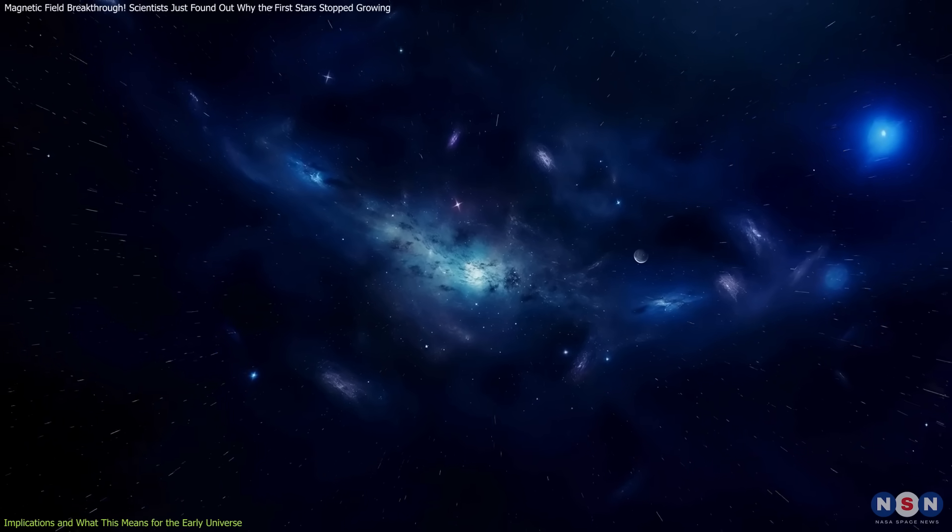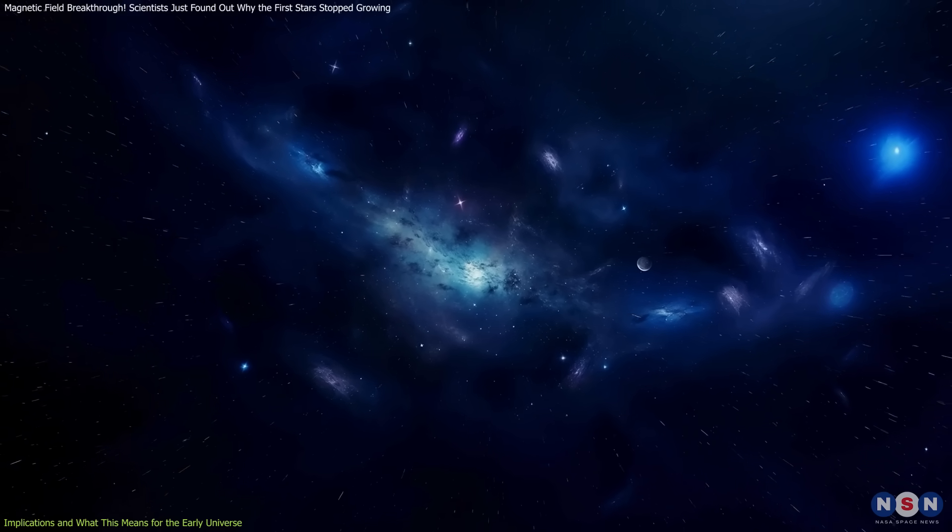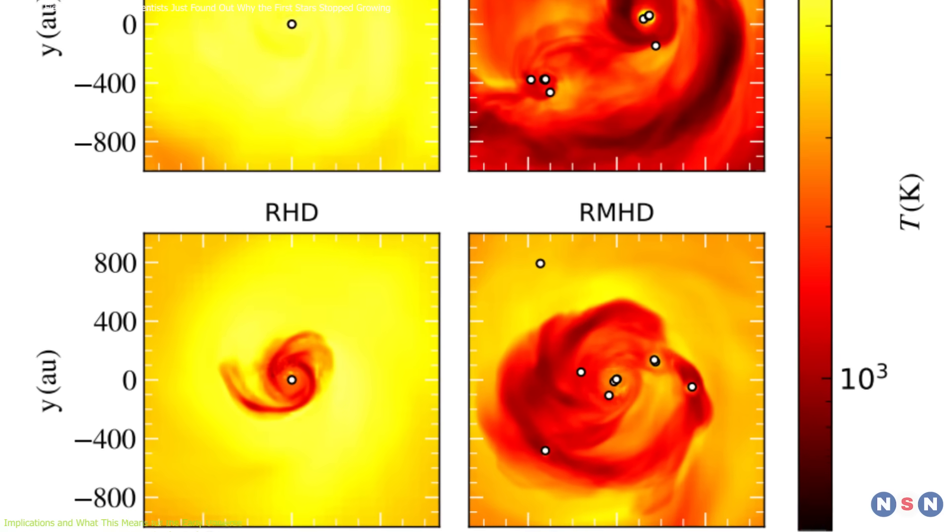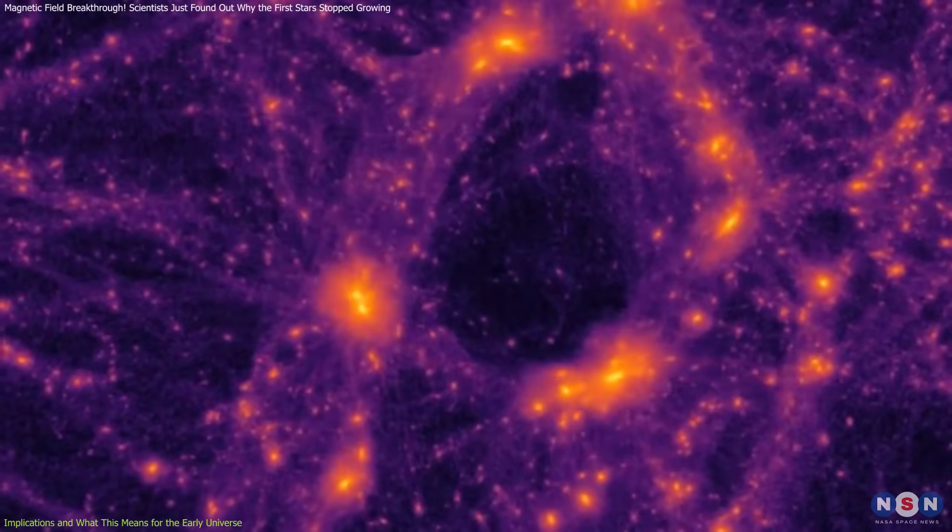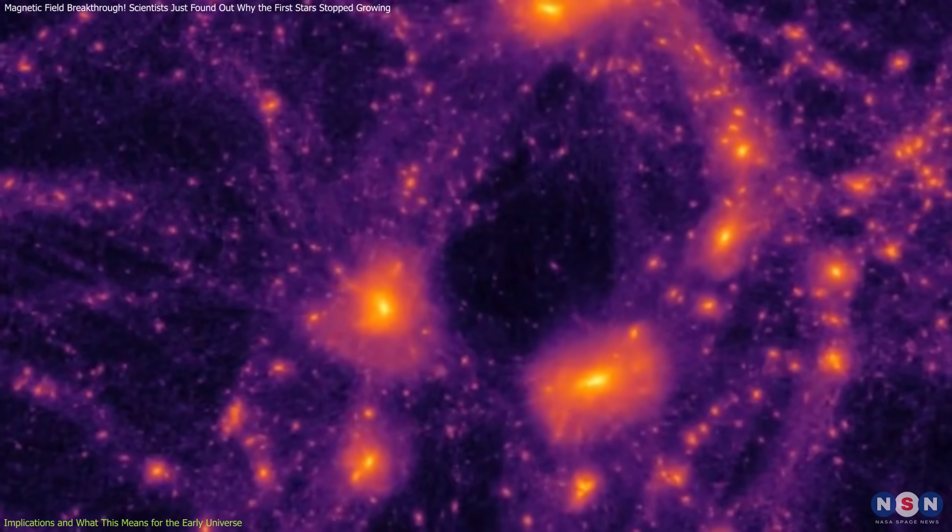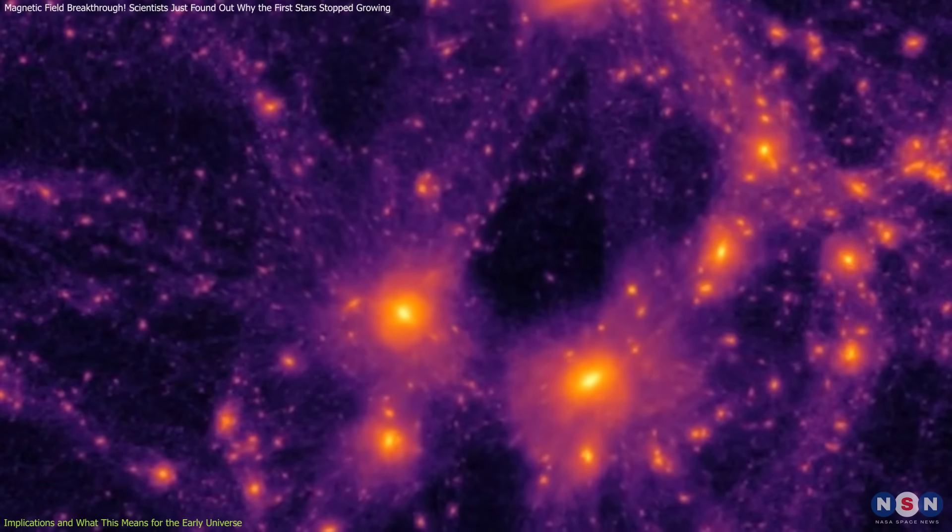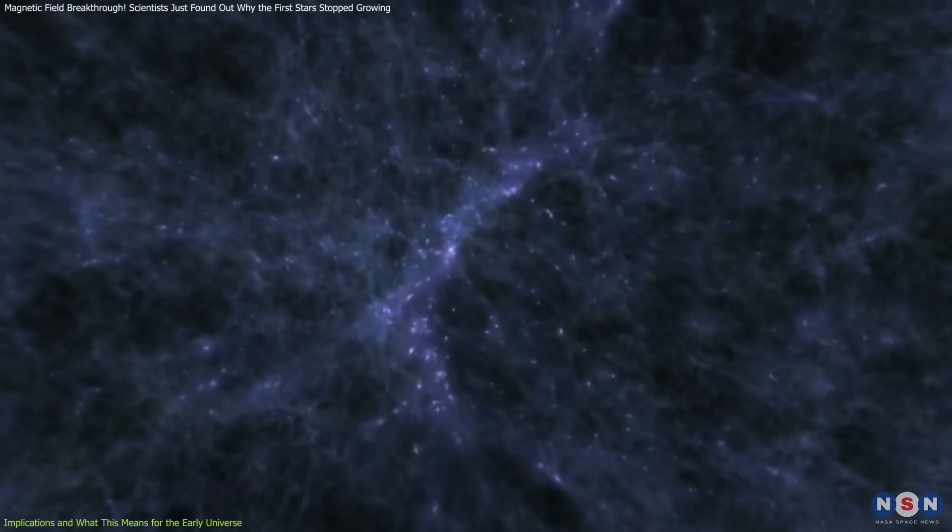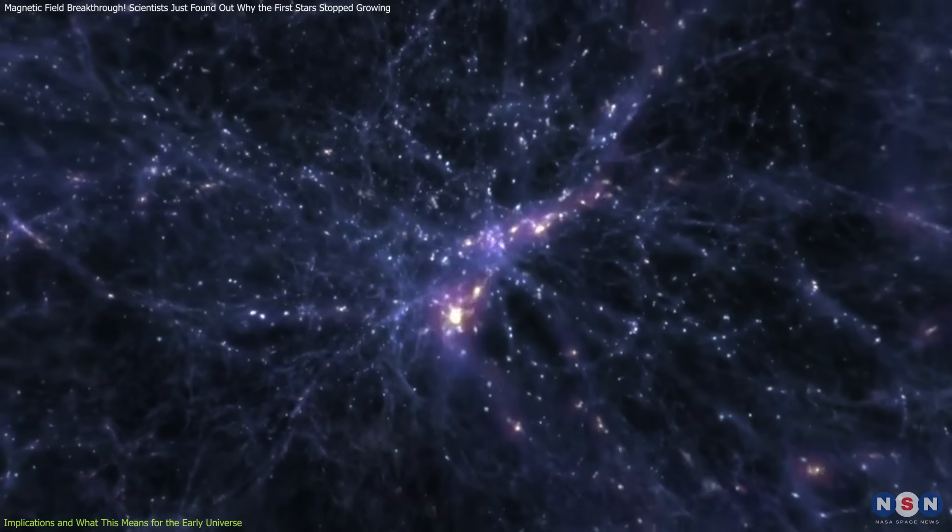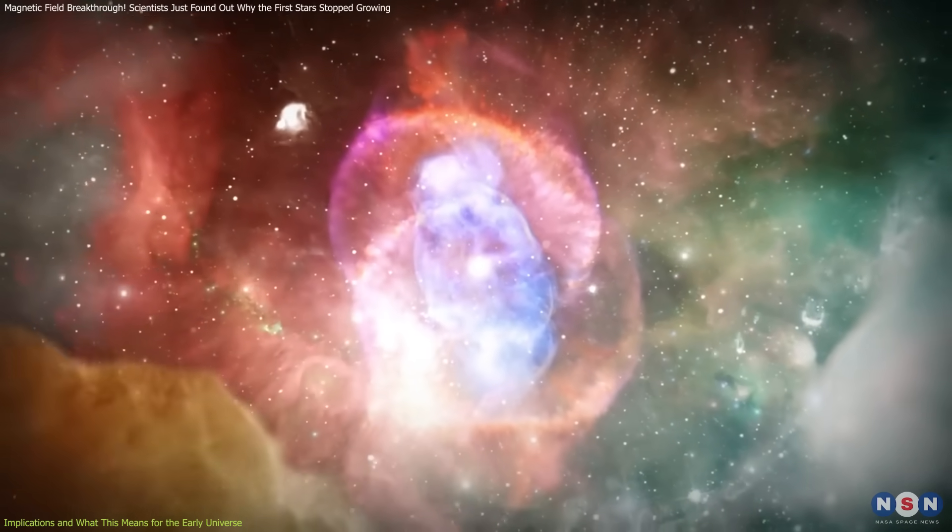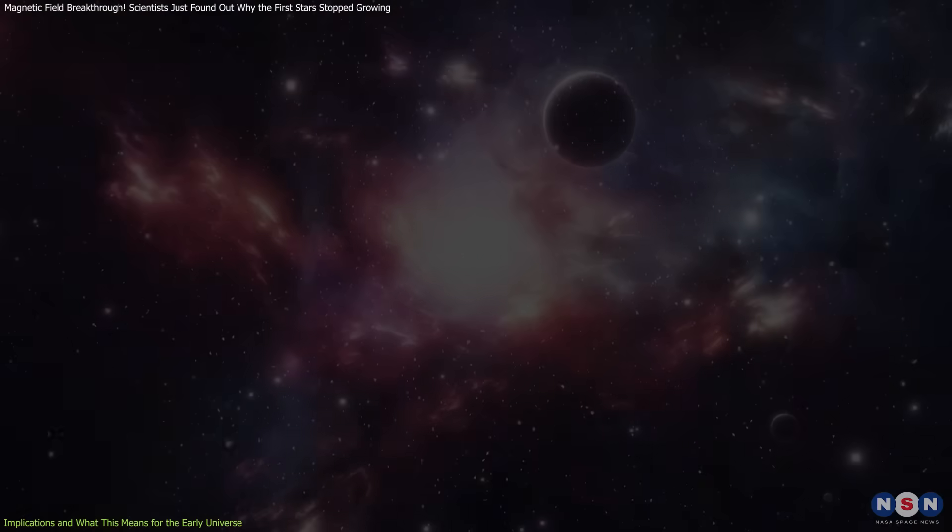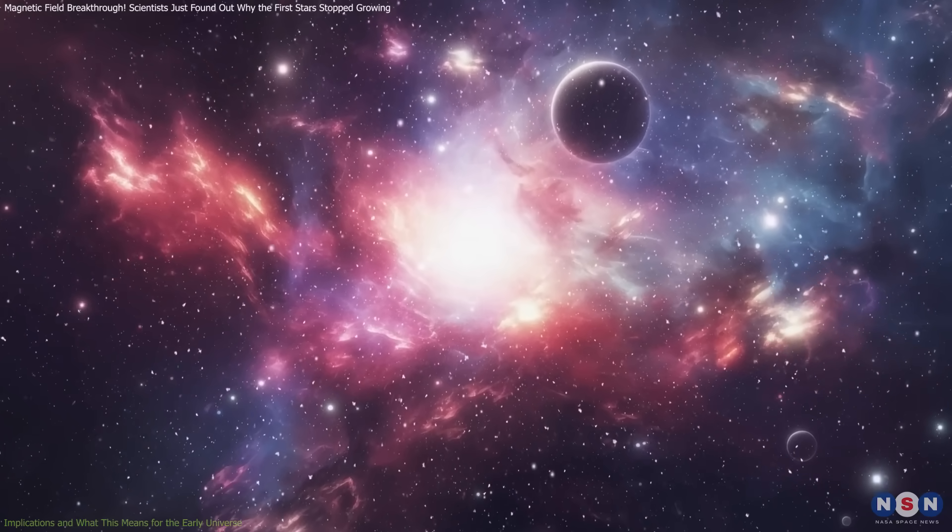The discovery means that magnetic fields were already influencing the large-scale structure of the universe at its earliest stages. They may have played a role in determining how the first galaxies formed, how early cosmic gas was distributed, and even how the first planets eventually took shape.